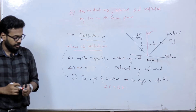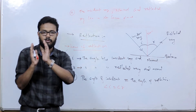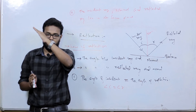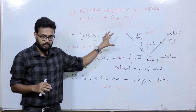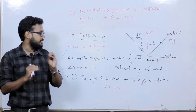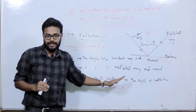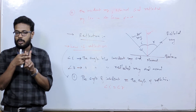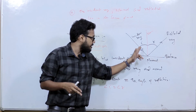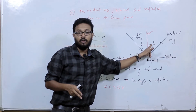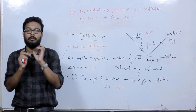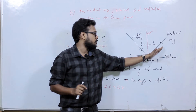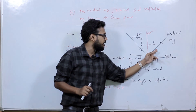Now let's review: a light hits on a surface in the same medium. How can you describe the law of reflection? The law of reflection says the angle of incidence equals the angle of reflection — they have the same value. Three lines — incident ray, reflected ray, and normal — lie in the same plane.